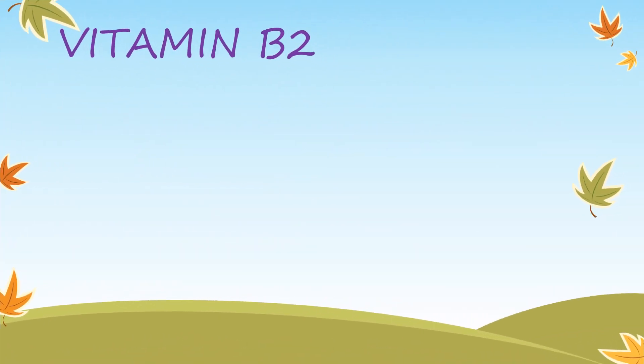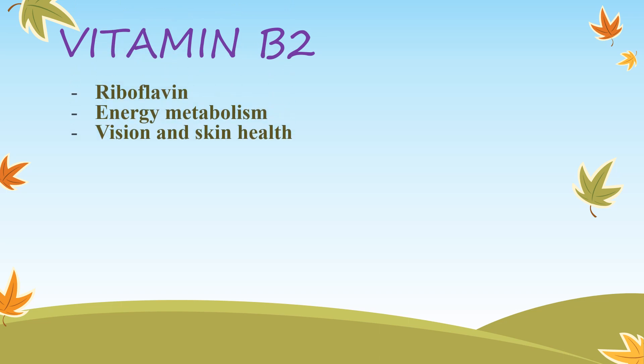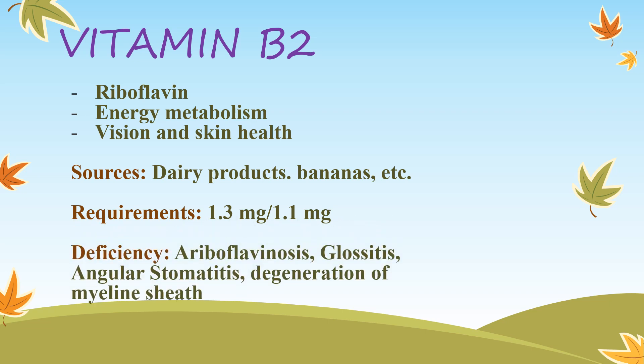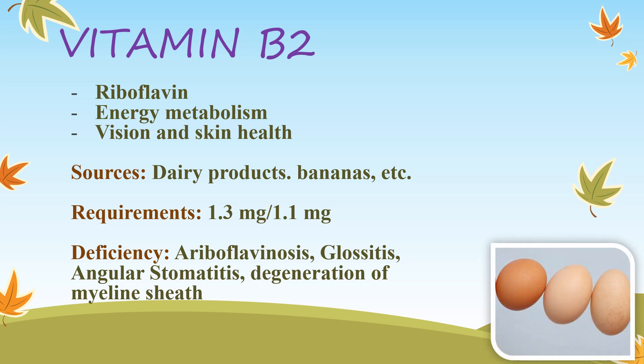Vitamin B2 — riboflavin — is a constituent of flavin mononucleotide (FMN) and flavin adenine dinucleotide (FAD), used by cells to transport hydrogen in metabolic pathways, and is involved in amino acid and carbohydrate metabolism. It is part of an enzyme needed for energy metabolism and is important for normal vision and skin health. Sources: dairy products, bananas, green beans, and asparagus. Recommended daily allowances: 1.3 mg for men, 1.1 mg for women. Deficiency causes ariboflavinosis, characterized by soreness of the mouth, glossitis — tongue becomes inflamed and swollen — angular stomatitis, inflammatory skin conditions, and degeneration of the myelin sheath.